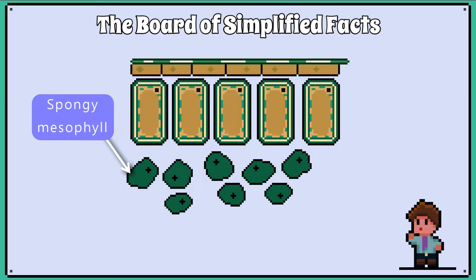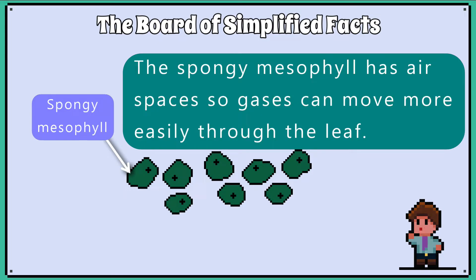Below the palisade mesophyll is the spongy mesophyll layer. The cells here are more spread out and you have gaps available for gases like carbon dioxide to move throughout the leaf.